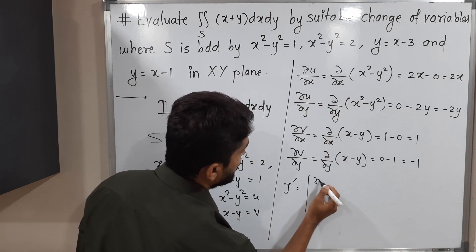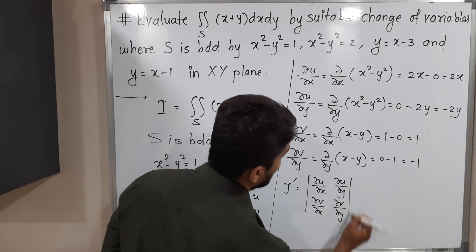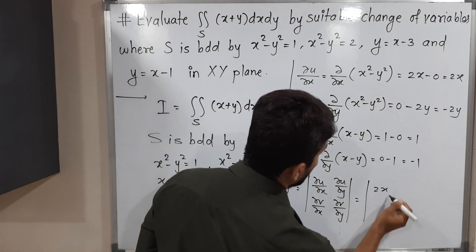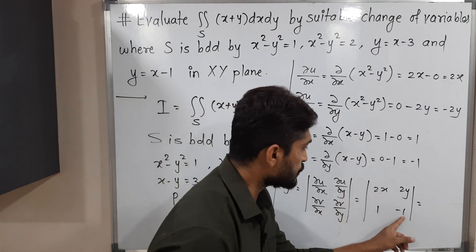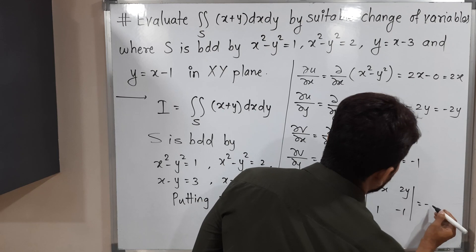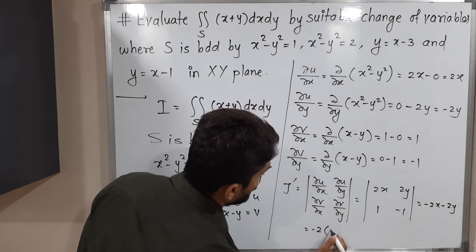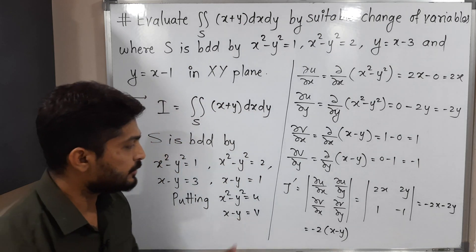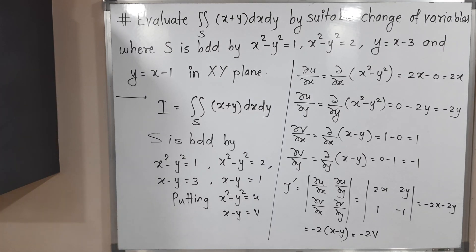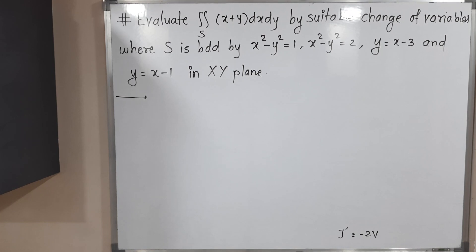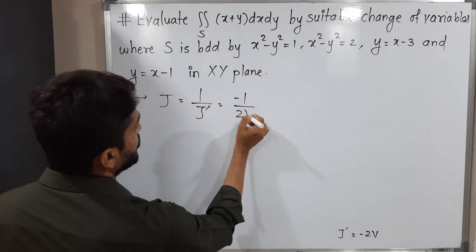Now we find J'. The formula is the determinant of ∂u/∂x, ∂u/∂y, ∂v/∂x, ∂v/∂y — putting in values: 2x, -2y, 1, -1. The determinant is (2x)(-1) - (-2y)(1) = -2x + 2y = -2(x - y). Since x - y = v, this equals -2v. Therefore J = 1/J' = -1/(2v).